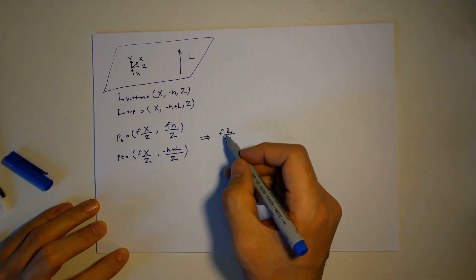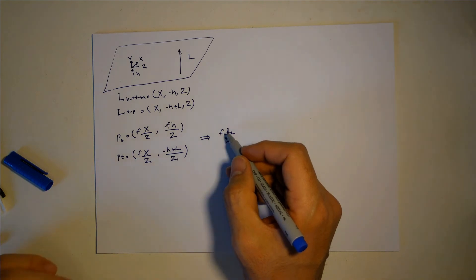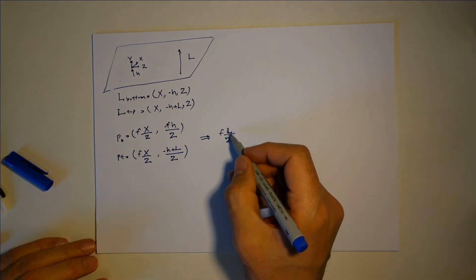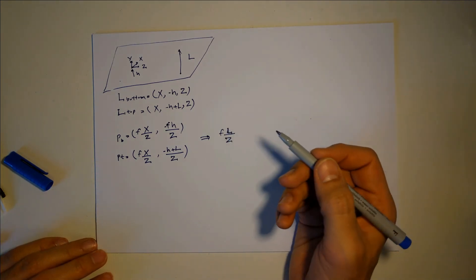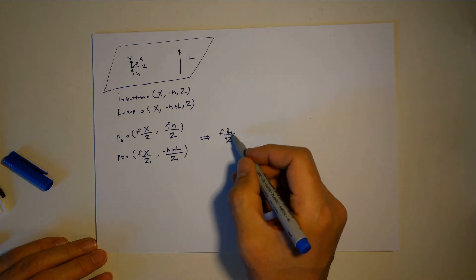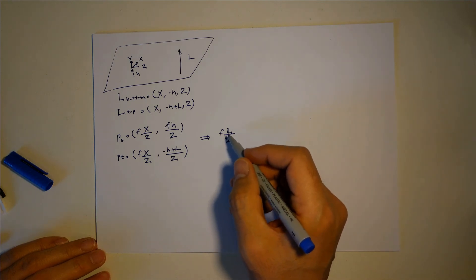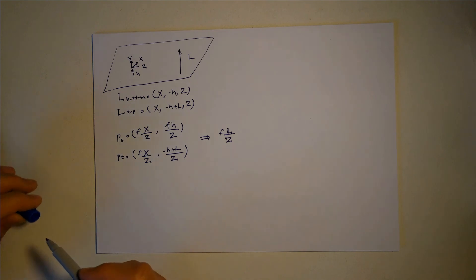So if you know your focal length and the size of the building that you're looking for, you know how far you should stay away from that building so it will be the size that you're looking for in your image plane.